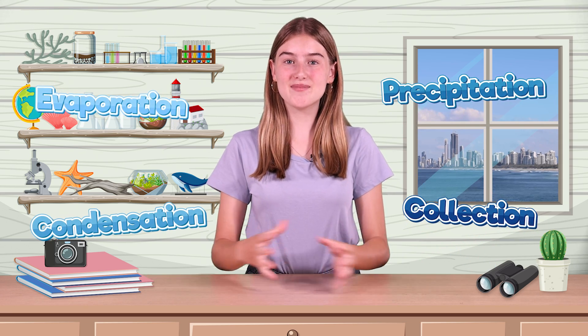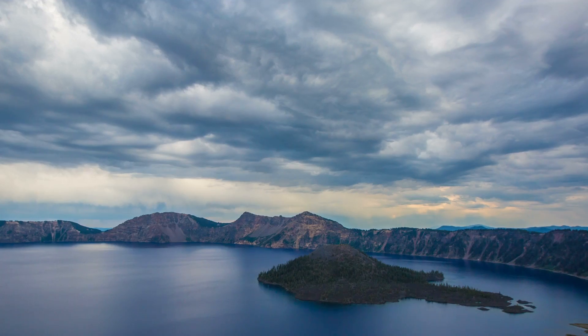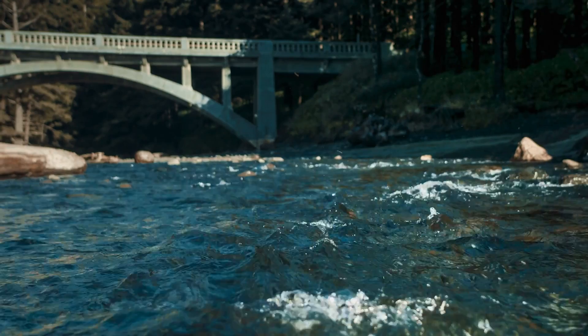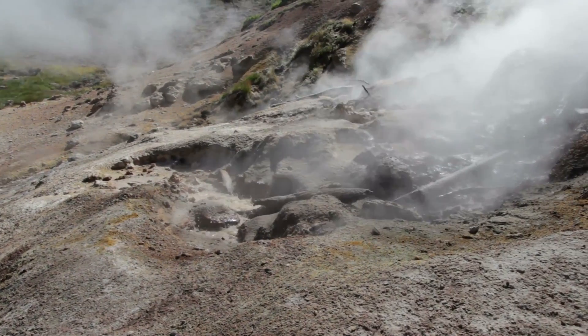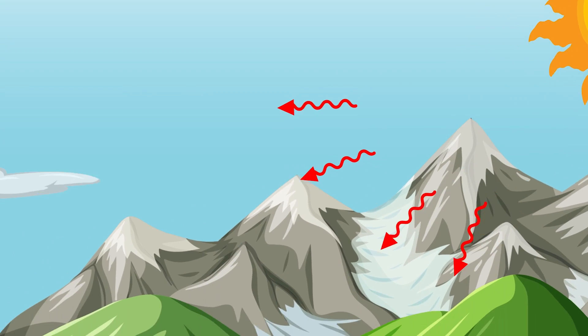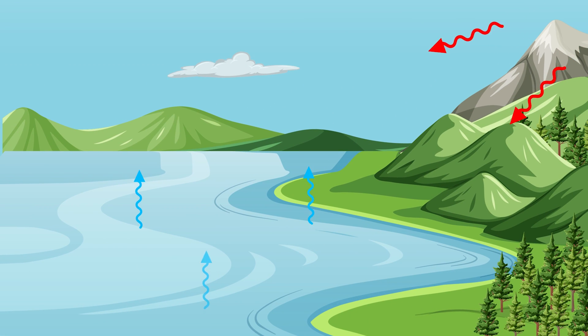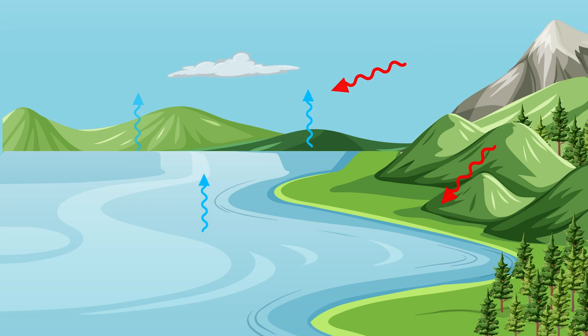First up, evaporation. This is the process where water on the surface of the Earth, such as oceans, lakes and rivers, turns into water vapour and rises into the atmosphere. This happens when the sun's heat warms the water and causes it to evaporate.